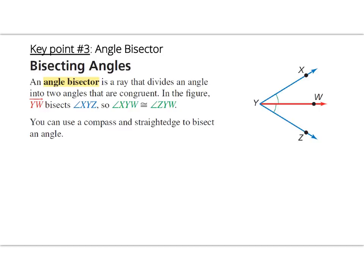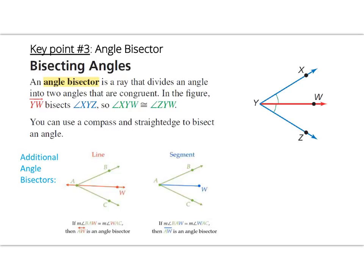Key point three: angle bisectors. Similar to segment bisectors, an angle bisector is a ray that divides an angle into two congruent angles. In this figure, ray YW bisects angle XYZ, so angle XYW is congruent to angle ZYW. A ray divides an angle in half into two equal parts. Lines and segments can also bisect angles. The implied statement is: angle bisector implies two congruent adjacent angles.